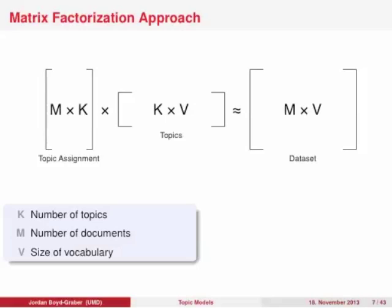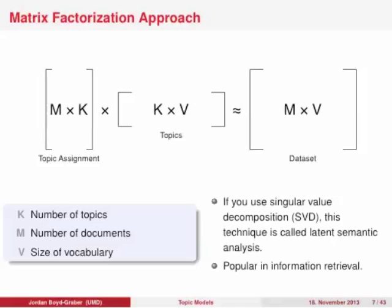An alternative perspective on topic models is to view it as a matrix factorization problem. You have a dataset of m by v, where m is the number of documents. Each cell in this matrix represents how many times a particular word appears in a document. What you want is a low-rank approximation in terms of your k topics. If you solve this using a singular value decomposition, this is called latent semantic analysis, which is very popular in information retrieval.